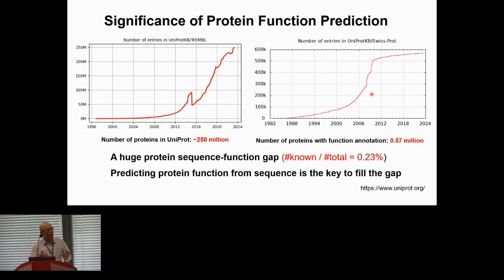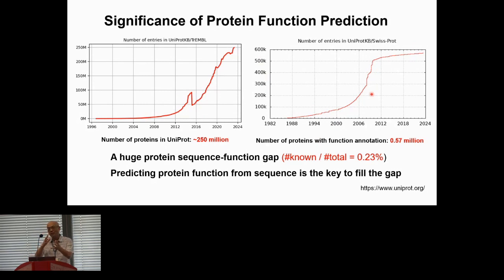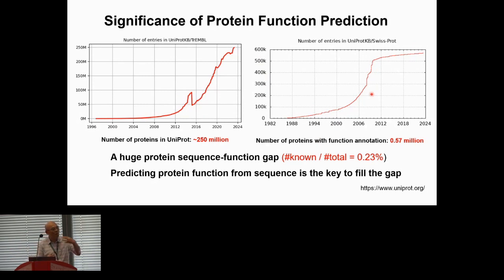We also want to directly use protein tertiary structure as input. However, this is very challenging because protein structure is a 3D object. You can rotate and translate it along X, Y, Z axes, but essential properties like protein function do not change. So we need models that can capture features that are independent of the rotation and translation of the 3D object — that is called an equivariant and invariant neural network.